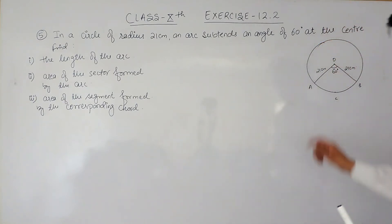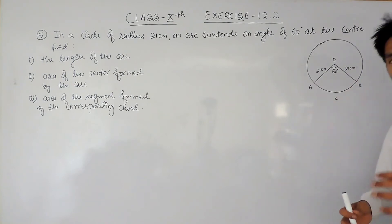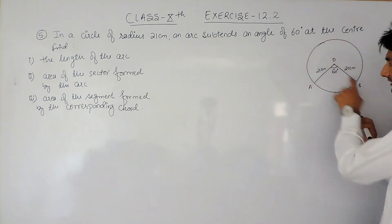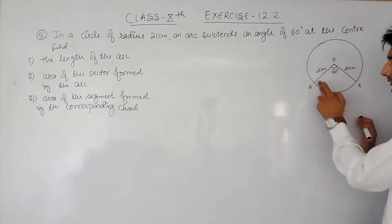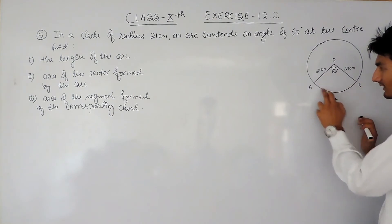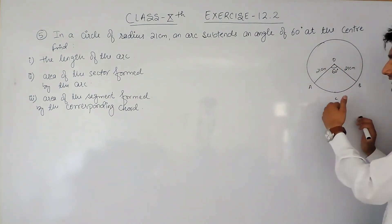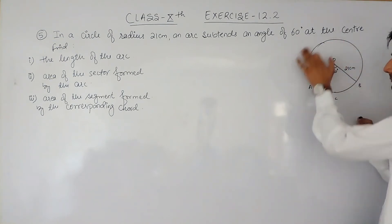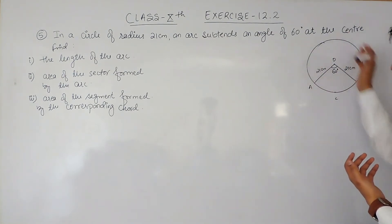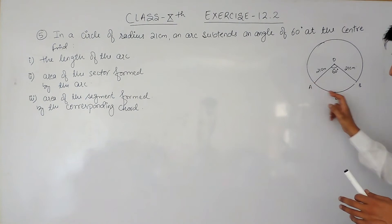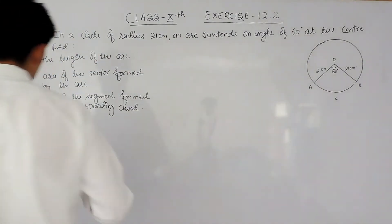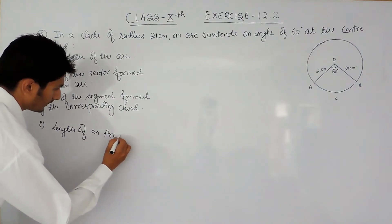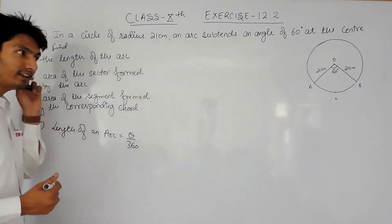First we have to find the length of this arc. As I discussed in the previous video, when the circumference of a circle is divided by radii or by a chord, the smaller portion is known as the arc. Because this is the smaller portion, it is known as the minor arc, and the major part of the circumference is known as the major arc. We have to find the length of this minor arc.